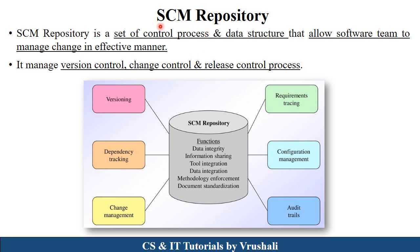The next topic is the SCM repository. Basically, the SCM repository is a set of all control processes and data structures which allow the software team to manage all the changes in an effective manner. In this diagram, the SCM repository uses a total of six tools: versioning, dependency tracking, change management, requirement tracing, configuration management, and audit trails. These six tools manage version control, change control, and release control processes. Let's discuss these functions and tools in detail.